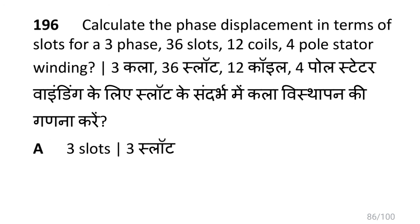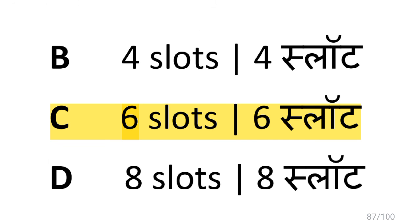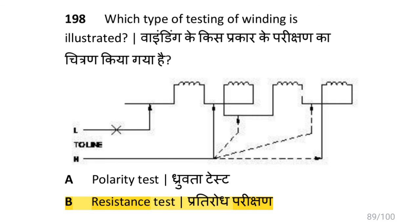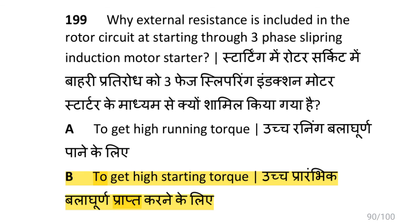Calculate the phase displacement in terms of slots for a three phase, 36-slot, 12-coil, 4-pole stator winding: the answer is 6 slots. The AC motor winding type where the number of coils per pole per phase is more than one arranged in different slots is distributed winding. The type of testing illustrated is resistance testing. External resistance is included in the rotor circuit at starting through a slip ring induction motor starter to get high starting torque.